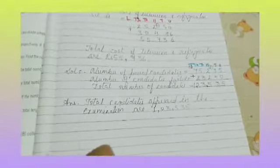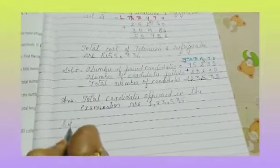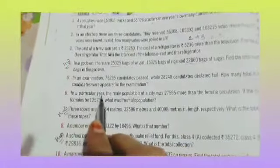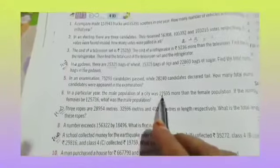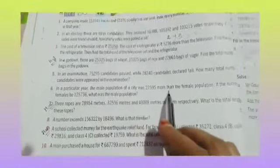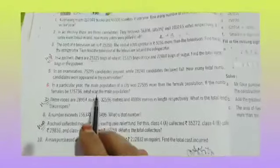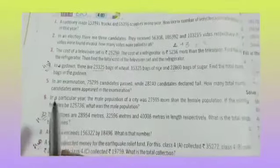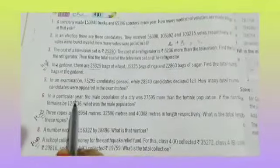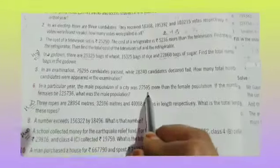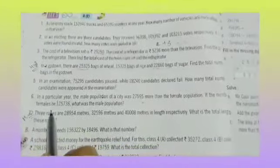Now copy down the next question. Question number 6. In a particular year, the male population of a city was 27,595 more than the female population. If the number of females was 1,25,736, what was the male population?